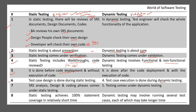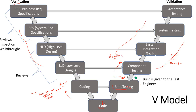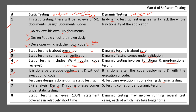The seventh difference: SRS analysis, design, and coding phases come under static testing. Testing - component testing, system integration testing, system testing, and acceptance testing - comes under dynamic testing. These four testing levels are carried out in the testing phase and come under validation, though unit testing is performed by the developer.